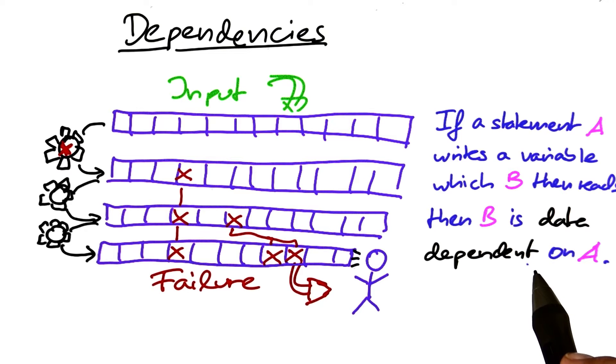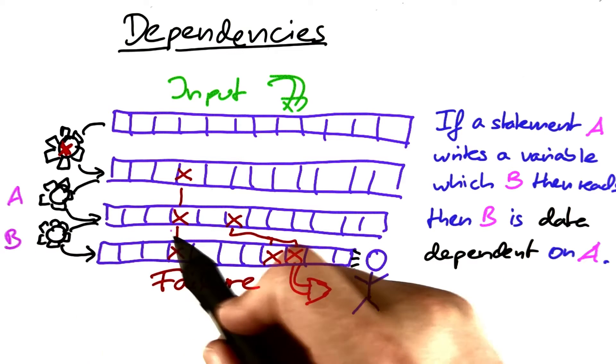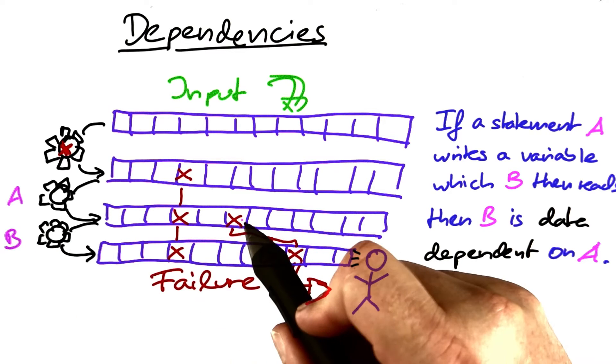The idea is as follows. We have two statements, say A and B in the program, and now A writes a variable which is later read by B.